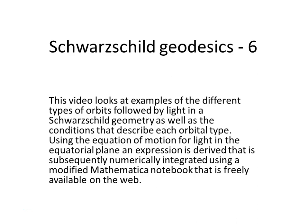This video looks at examples of the different types of orbits followed by light in a Schwarzschild geometry, as well as the conditions that describe each orbital type.